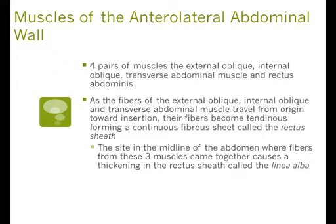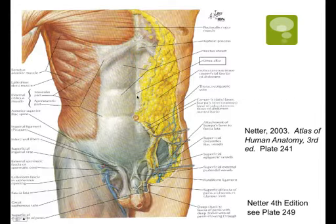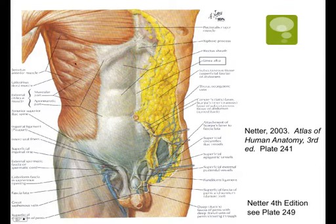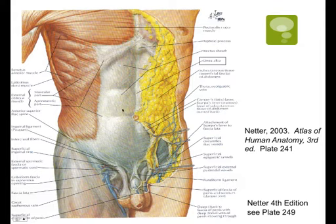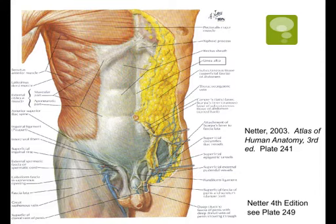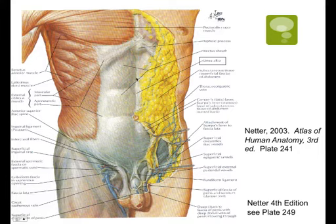There is a site in the midline of the abdomen where the fibers of these three muscles come together, causing a real thickening of this rectus sheath called the linea alba — right in the center of your abdomen. The obliques and transverse abdominal all transition into this white fascial system, the aponeurosis. This aponeurosis is what helps make your six-pack — you can see the lines. The linea alba is the center line, and then there are invaginations of fascia that form those other little pockets of abdominals.